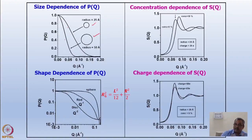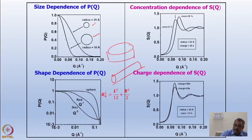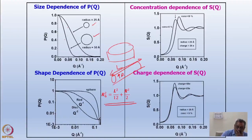Now, shape dependence: many times organic assemblies like micelles need not be spherical — they can be rod-like or disc-like. For all these shapes, you can find the average hydrodynamic radius or radius of gyration. For example, Rg² for a rod is written in terms of radius r and length l. The nature of the intensity fall-off is different for each shape, so small-angle neutron scattering allows you to determine not only the size of the particle but also its shape.